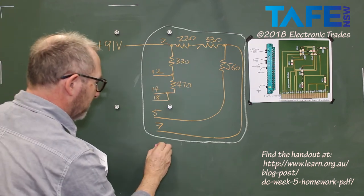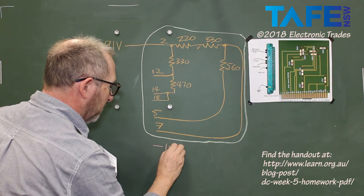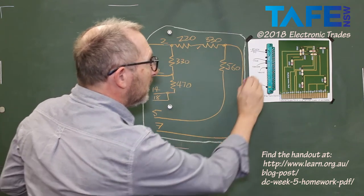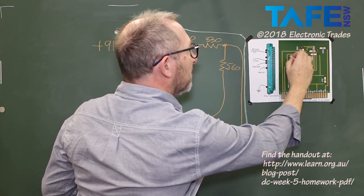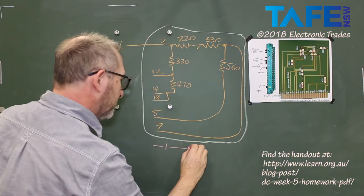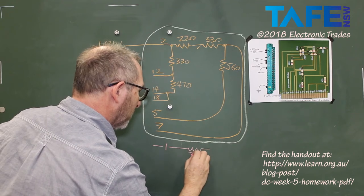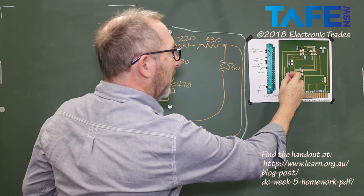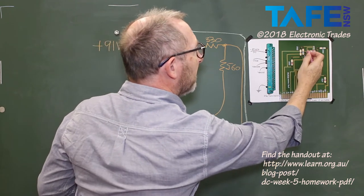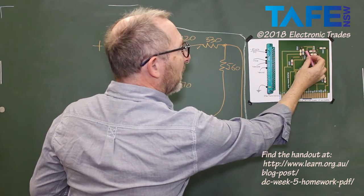Okay. Different colour. Pin 1 comes into the board, comes up, goes through a 220 ohm resistor.